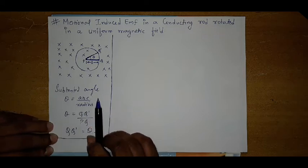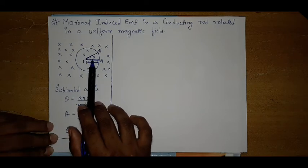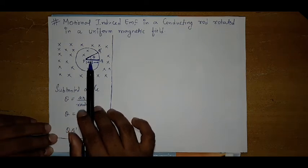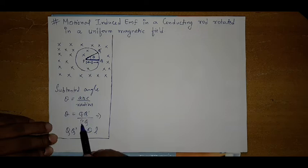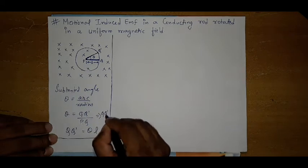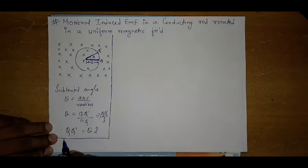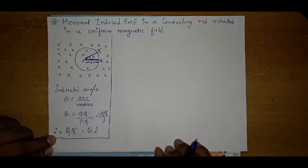Now we are going to calculate induced EMF for a very small angle theta. So by that, we have subtended angle theta is equal to arc by radius, and theta is equal to QQ dash by PQ. So by that it is QQ dash upon L. Therefore, QQ dash is equal to theta into L.